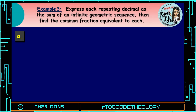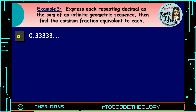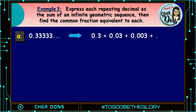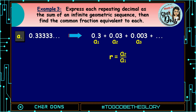Example number 3: Express each repeating decimal as the sum of an infinite geometric sequence, then find the common fraction equivalent to each. Letter A: 0.3333... It means it keeps going on and on. We can write the decimal as a sum: 0.3 plus 0.03 plus 0.003, and so on. So a sub 1 is 0.3, a sub 2 is 0.03, a sub 3 is 0.003, and so on. To find the value of r, our common ratio, we divide the second term by the first — a sub 2 divided by a sub 1 — and that is 0.03 divided by 0.3, which equals 0.1.